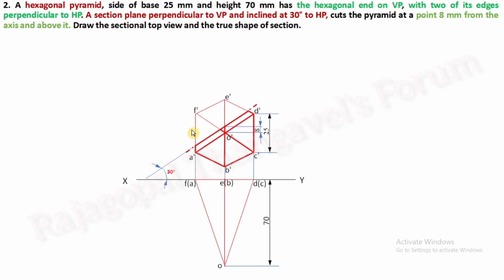Convert all the remaining slant edges into thick lines — the front view is now completed. Identify the section plane cutting points. Point 1': this is on the f'a' side of the hexagon — if you extend the projector it is exactly on XY, giving point 1 in the top view. Next, slant edge o'f' — extend this upward to get point 2', and extending a vertical projector gives point 2 on slant edge of in the top view.